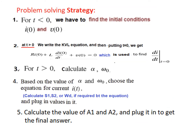We also discussed the problem-solving strategy, which we will follow here. First, we find i(0) and v(0) for t less than 0. Then for t greater than 0, we find di/dt at 0. We also calculate alpha and omega, and based on their values we select the current equation. Any unknowns like S1, S2, or omega_d are then calculated, giving us the general equation. From that general equation, we solve to get A1 and A2.